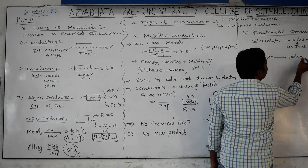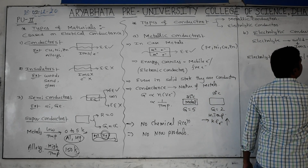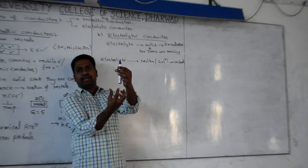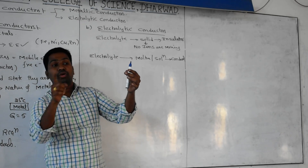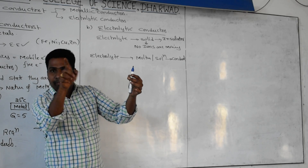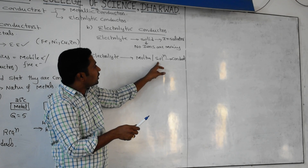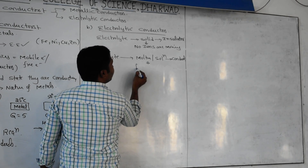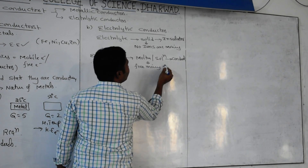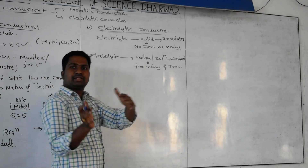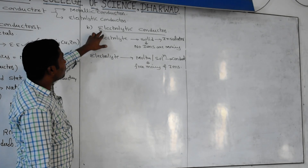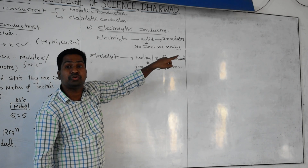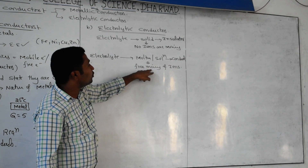The same electrolyte in either molten state or solution phase acts as a conductor. Molten means heating NaCl without adding any solvent until it becomes liquid. In molten or solution phase, free movement of ions occurs - they carry energy from one place to another. Electrolytic conductors are those where an electrolyte in molten state or solution phase acts as a good conductor due to the presence of freely moving ions.